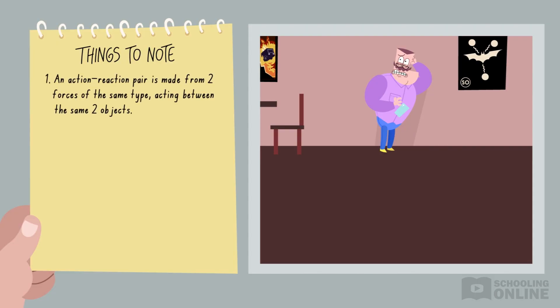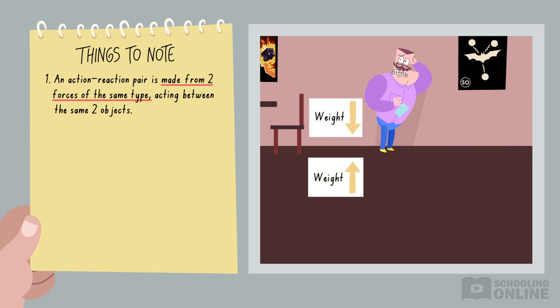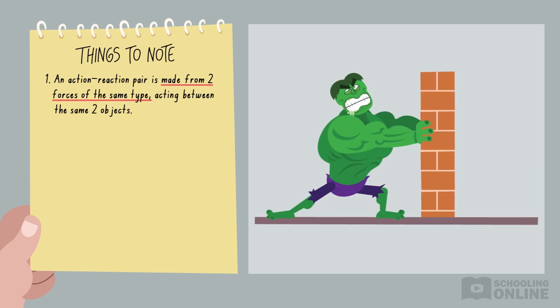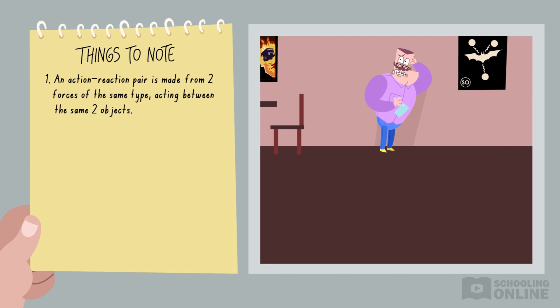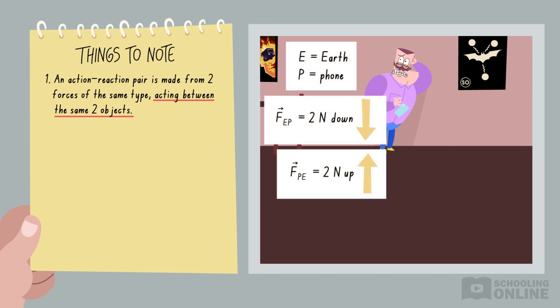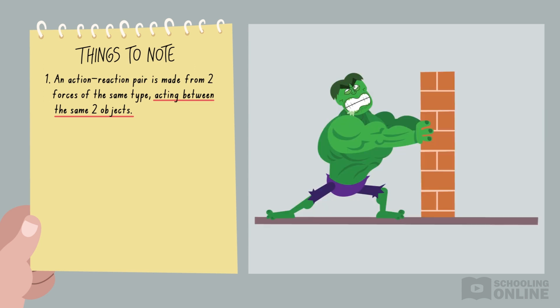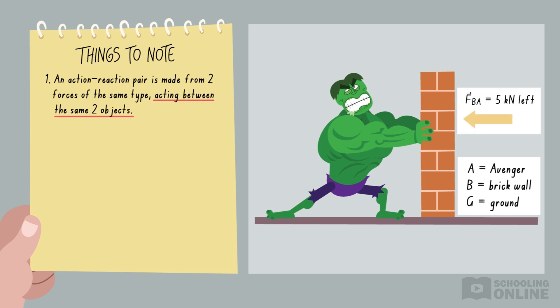It's time to discuss the rules for identifying action-reaction pairs. Firstly, both forces must be the same type. In the previous example, we identified two weight forces, so they form a valid pair. On the other hand, the normal force and friction do not make a pair. Furthermore, an action-reaction pair only exists between the same two objects. If one interaction is between a person and a brick wall, but the other involves the ground, then it is not a pair.